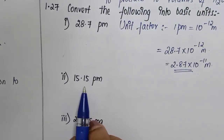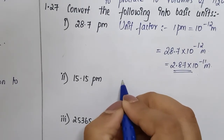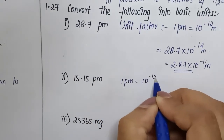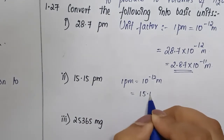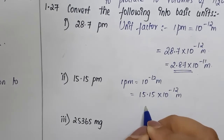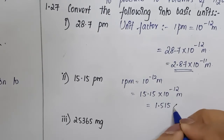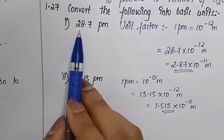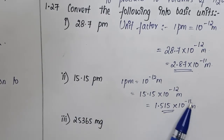Similarly for the second question, it says 15.15 picometers. Here also, as per the unit factor, one picometer equals 10 to the power minus 12 meters. Therefore this is going to be equal to 15.15 into 10 to the power minus 12 meters, which is equal to 1.515 into 10 to the power minus 11 meters. Questions one and two are both in picometers, so it's an easy conversion if we know this relation.